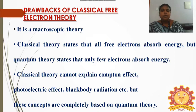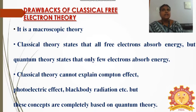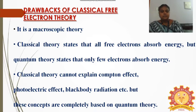The third important drawback is that this classical theory fails to explain some important optical properties. It fails to explain the quantum effect, photoelectric effect, black body radiation, etc., which are very important. But based on quantum laws, these concepts are completely and clearly explained by the quantum theory. Up to this, the classical free electron theory is over.